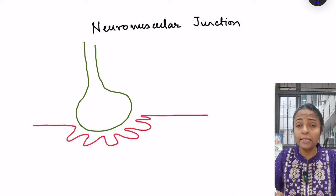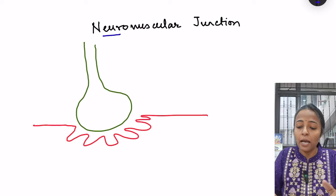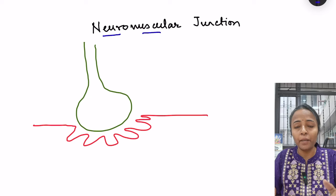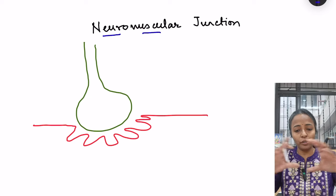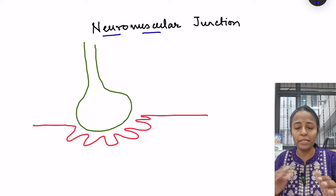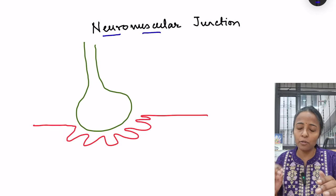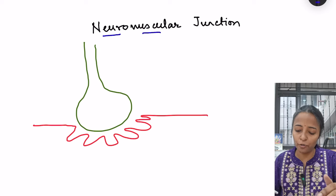The neuromuscular junction, as its name indicates, is a junction between a neuron terminal and the muscle membrane. It is not on the full muscle membrane — the membrane has a lot of muscle fibers, and on those muscle fibers this neuron makes contact, forming the neuromuscular junction.